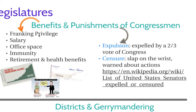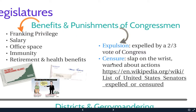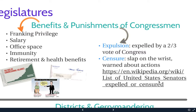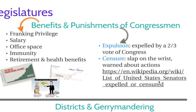Here are some punishments — there are only two. You can be expelled, which requires a two-thirds vote of Congress. If a congressperson is expelled, their immunity and benefits would no longer apply. They can also be censured, which is just a slap on the wrist and a warning about actions — that is the more likely of the two, though neither is really all that common. If you look at this list, most senators or representatives were expelled or censured right around the Civil War, though some cases extend into the 2000s, typically involving embezzlement or misappropriation of spending.